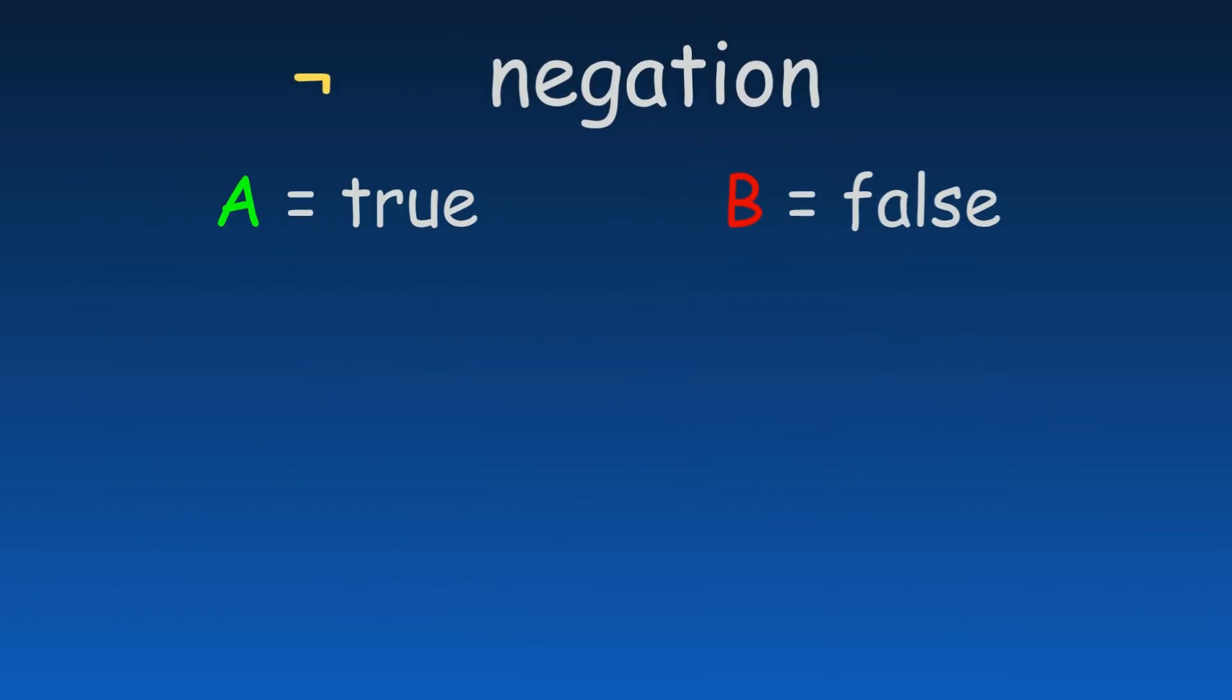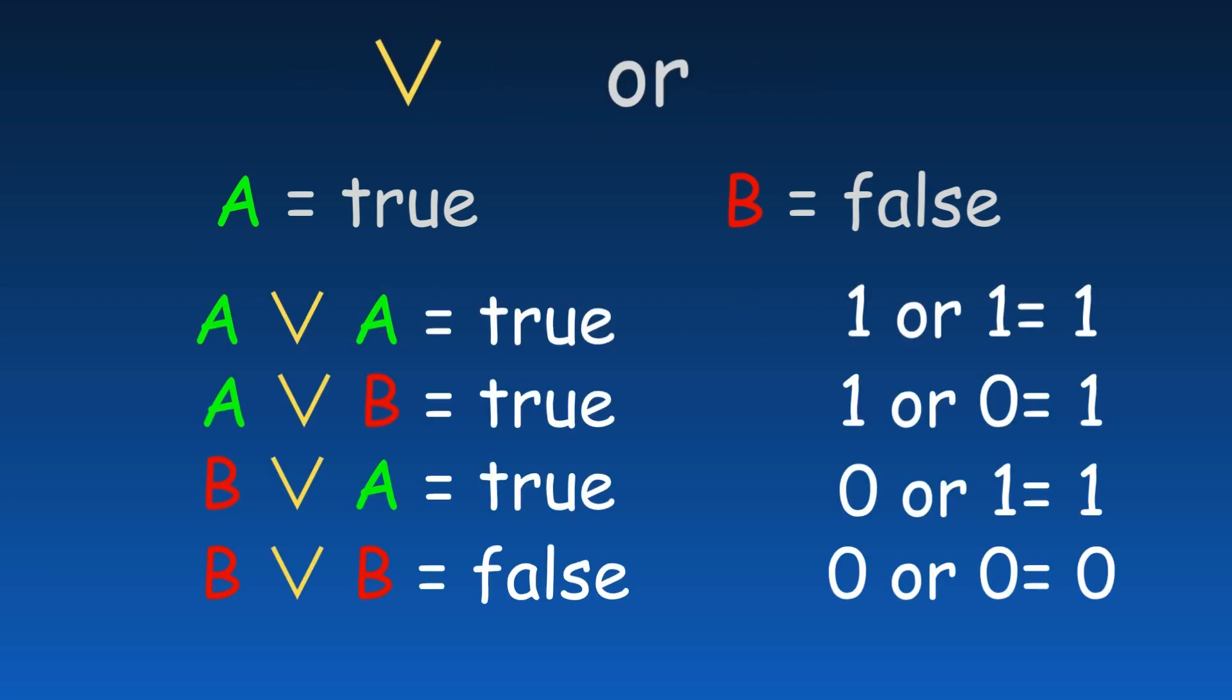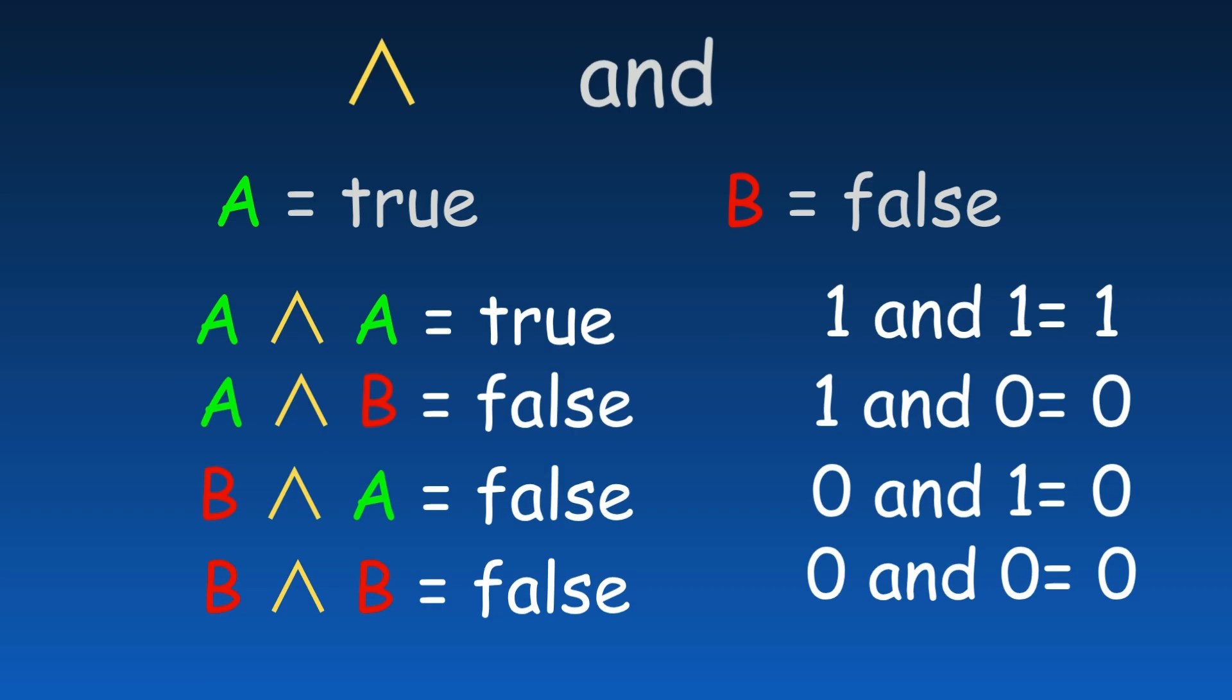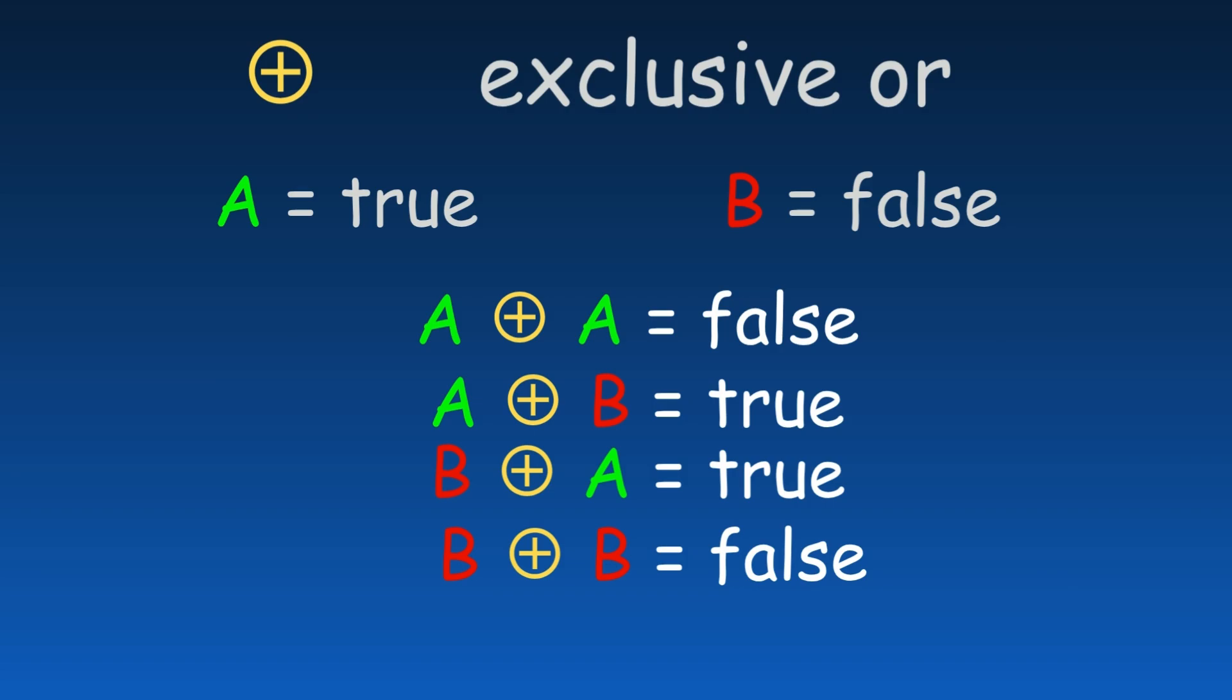The negation symbol is used in logic to show the opposite of a statement. The OR operator returns true if at least one of the conditions is true. The AND operator only returns true if both conditions are true. The exclusive OR operator returns true if only one of the conditions is true but not both.